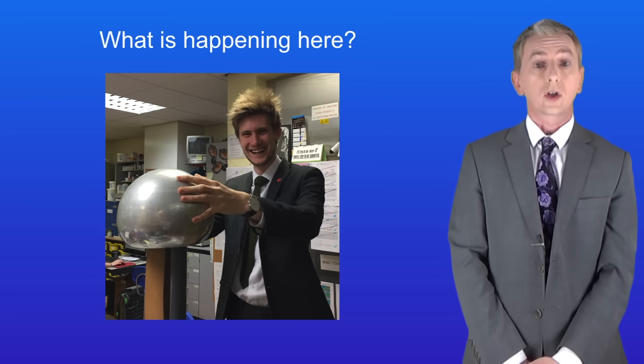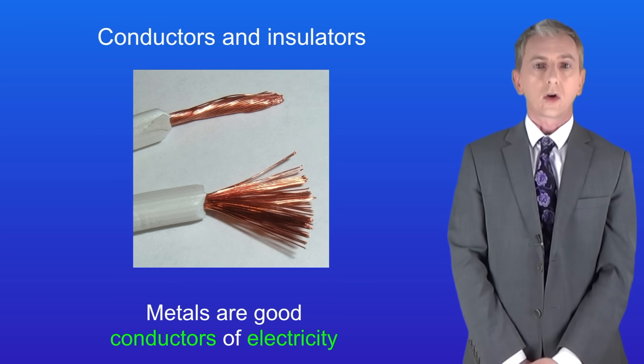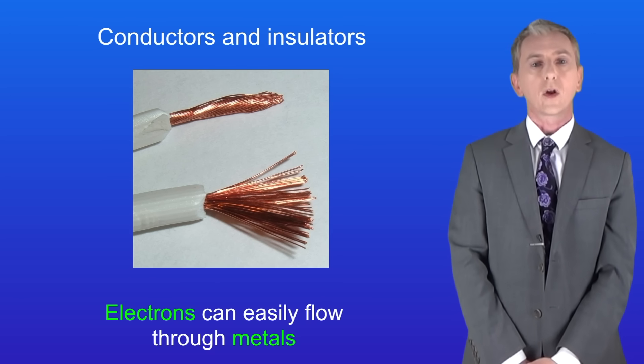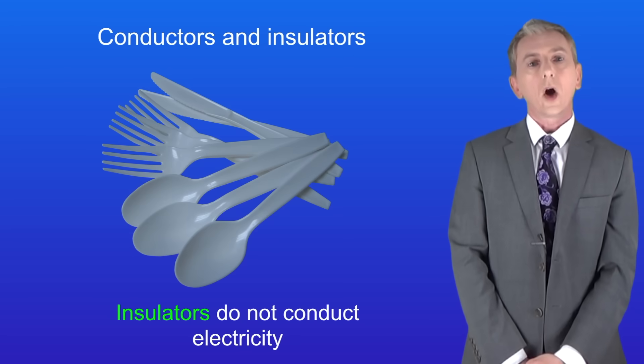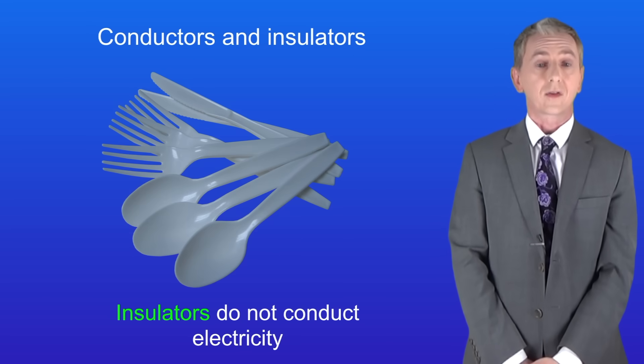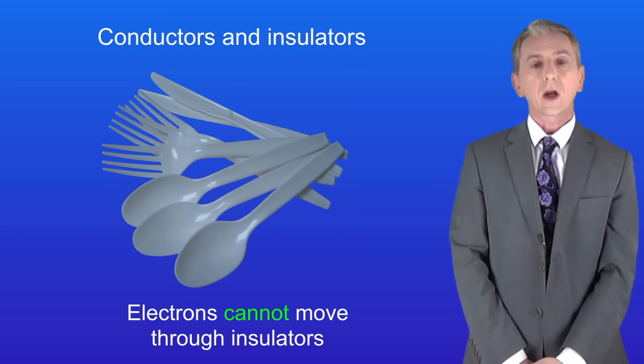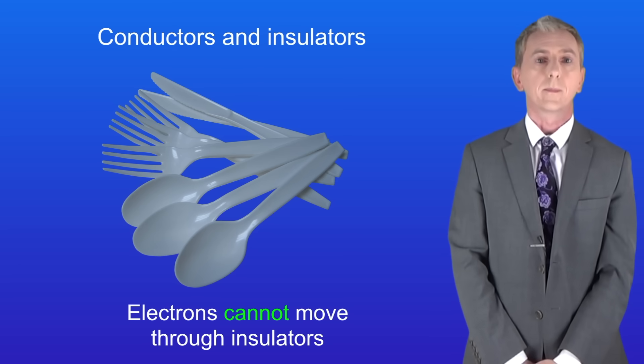So first we're going to take a look at conductors and insulators. Remember that metals are good conductors of electricity. That's because electrons can easily flow through metals. Objects such as plastic and glass are insulators. They do not conduct electricity. That's because electrons cannot move through them.